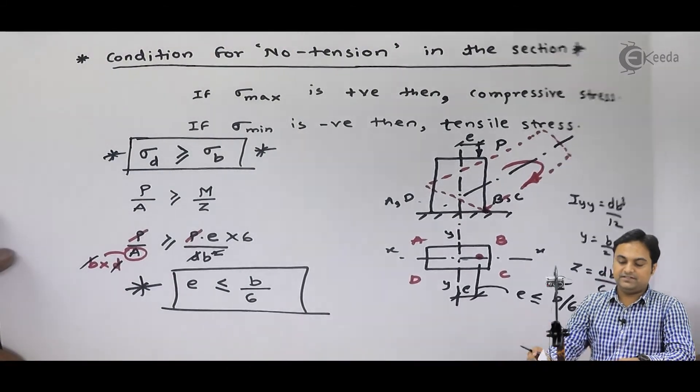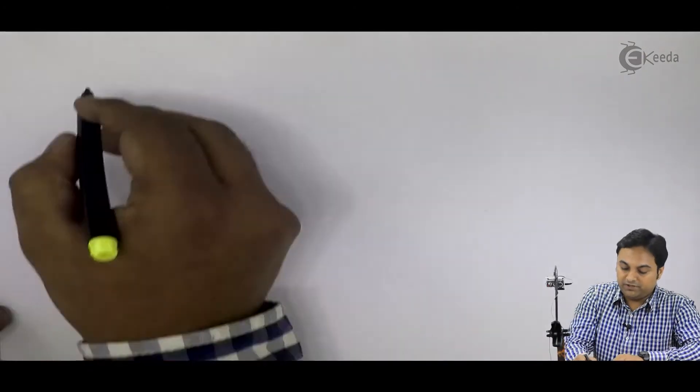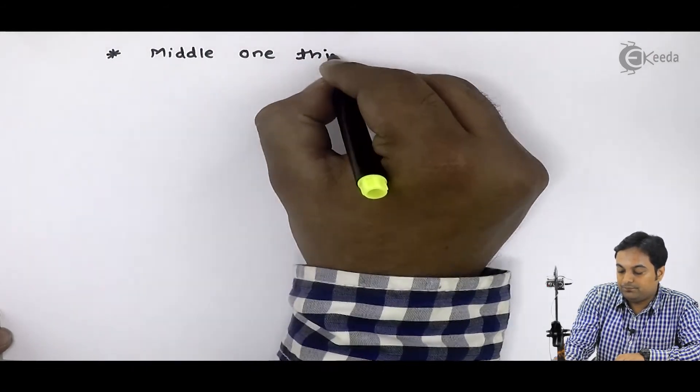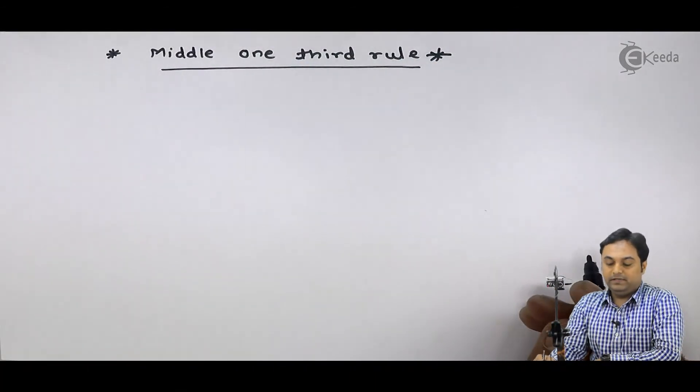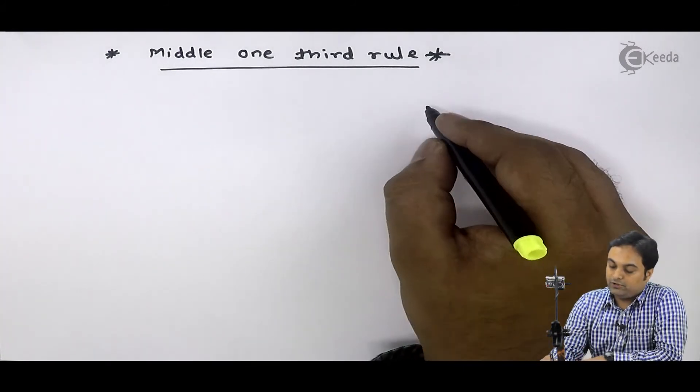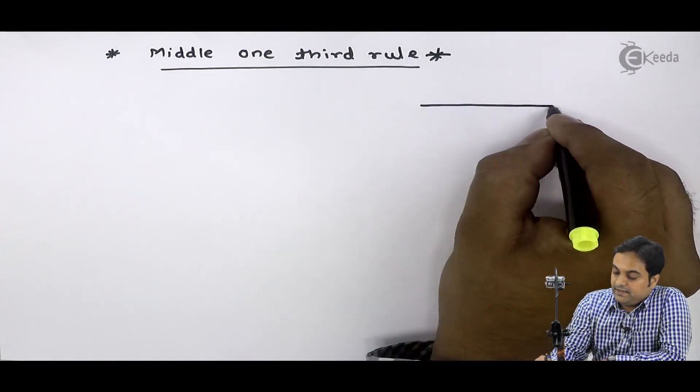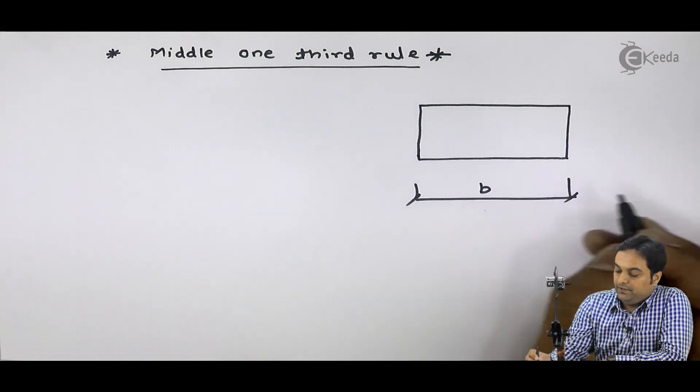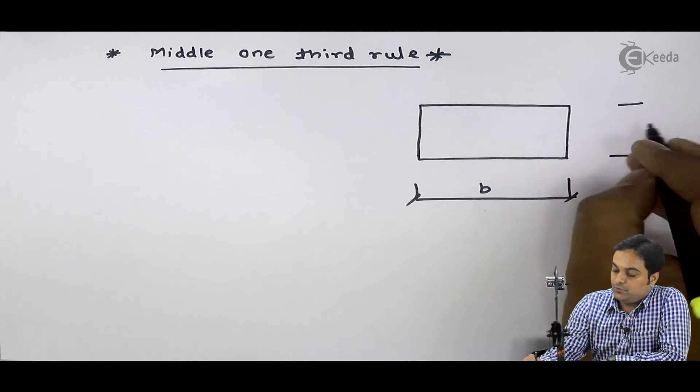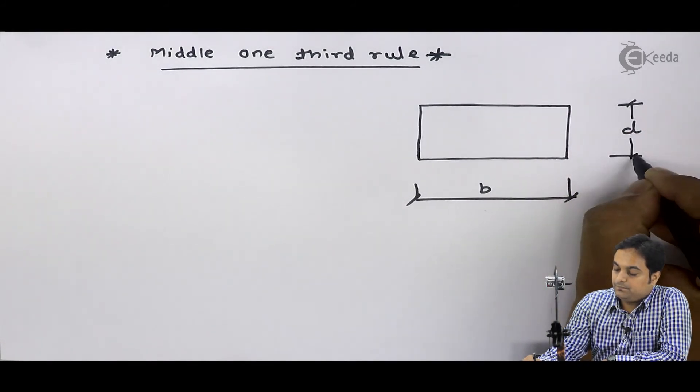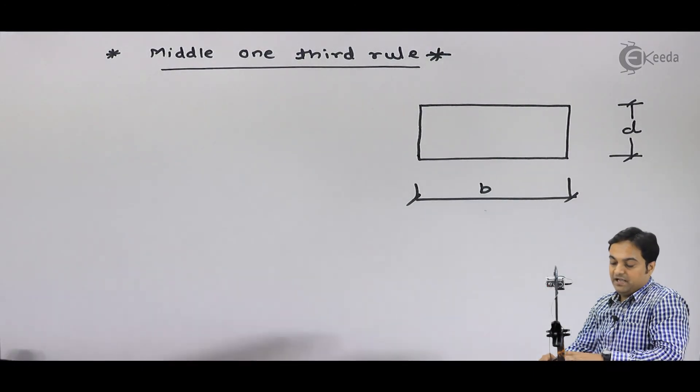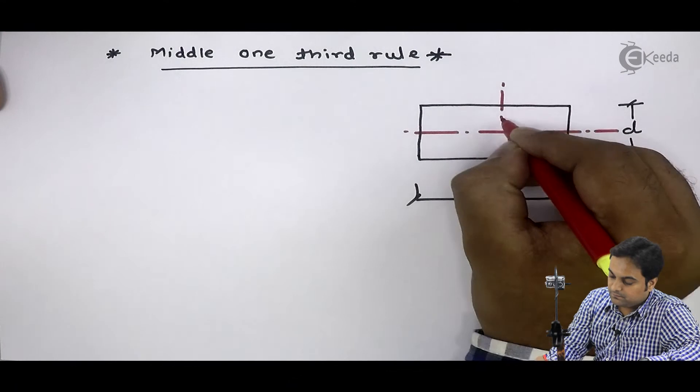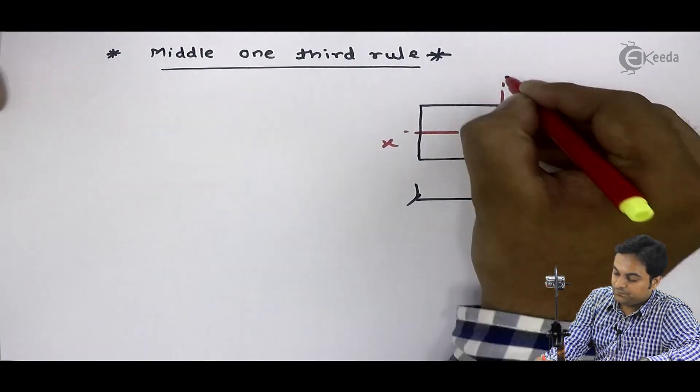Now after this, let me show you some other concept, which is called as middle one third rule. It is called as middle one third rule. Now, let me explain it to you. What is the meaning of middle one third rule? For this, I will be considering a rectangle. I will say that the width of this rectangle is small b, depth is small d. Now I will explain to you what is the meaning of middle one third rule. For this, first let me draw the axis. Here I have x axis and y axis.